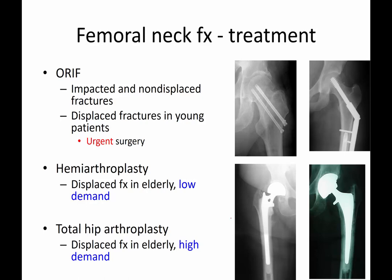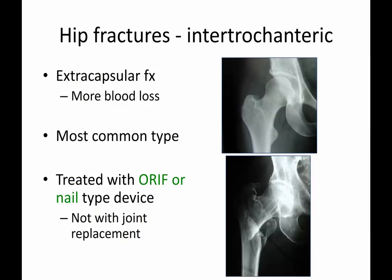In cases where you're concerned the femoral head will undergo osteonecrosis in an elderly patient, you may consider replacing it — either a hemiarthroplasty with just a new ball, or a total hip replacement with both a socket and a ball on a metal stem. If the fracture is impacted or nondisplaced, fixation rather than replacement may be preferred. In a young patient with a displaced femoral neck fracture, joint replacement is avoided if possible, so you do your best to fix it and hope to avoid osteonecrosis.